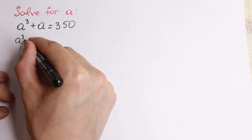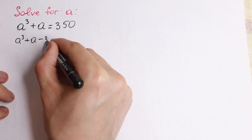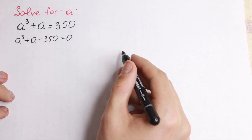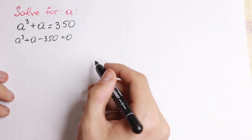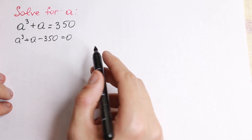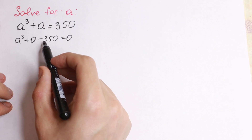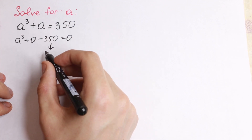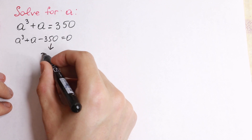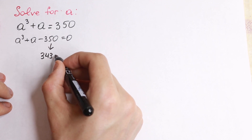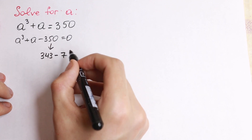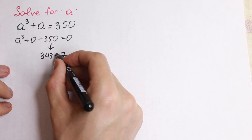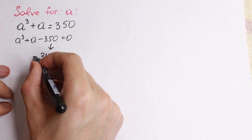So we have a cube plus a minus 350. Let's start — let's bring this 350 to the left hand side. And right now it's really good to look at this 350, because it's really good to write this 350 as 343 minus 7, or plus 7 with parentheses. Let's write it as plus 7 in parentheses.